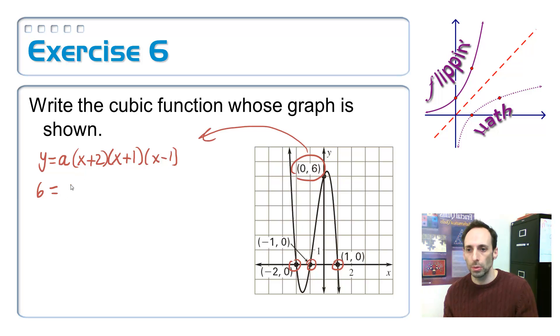Man, this couldn't be simpler. a times, and then I'd have 2 from the first one, and then I'd have 1 from the next one, and then I'd have negative 1 from the last one. So 2 times 1 times negative 1 is negative 2. Negative 2a equals 6. And then divide. So a is equal to negative 3.